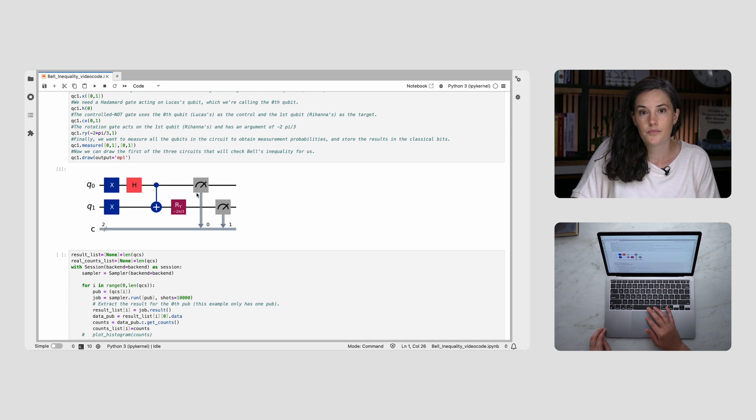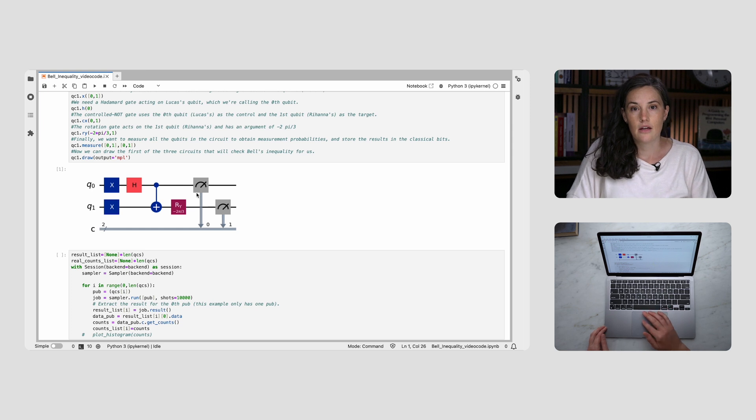Now we need to measure each qubit. We'll set Lucas's measurement to be along A, which we'll say is the Z axis, then Rihanna's measurement can be along A, B, or C.